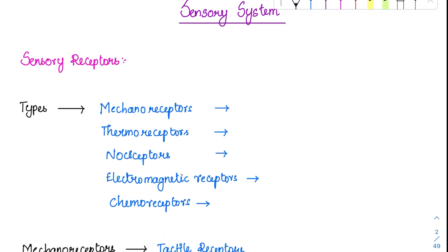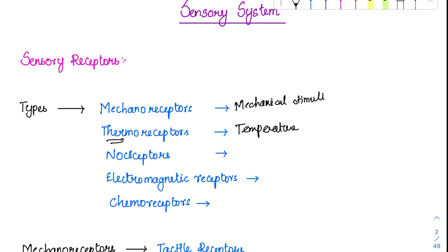The first type is mechanoreceptors — they are going to sense mechanical stimuli. Then thermoreceptors: as the term indicates, thermo means temperature, so these are temperature sensors, or temperature receptors.